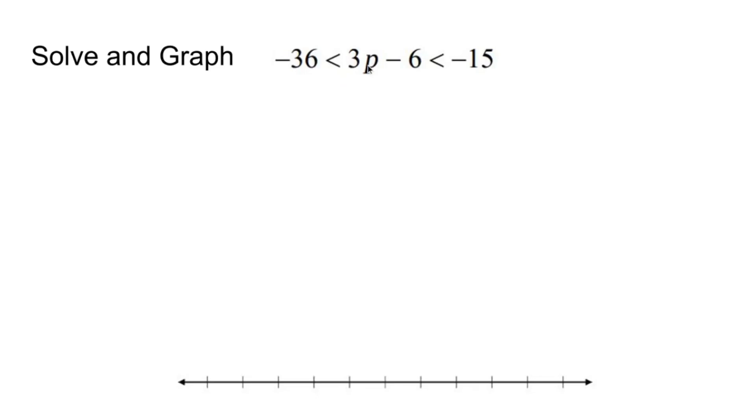So if I look at 3p minus 6, my first thinking is I have to get rid of minus 6 first. So let's add 6 to all three sides. That crosses out. 3p drops down in the middle, less than and less than also drops down. Negative 36 plus 6 is negative 30. Negative 15 plus 6 is negative 9.